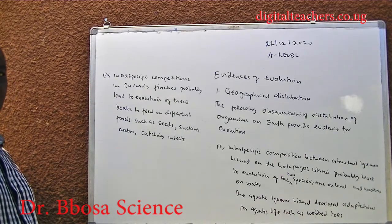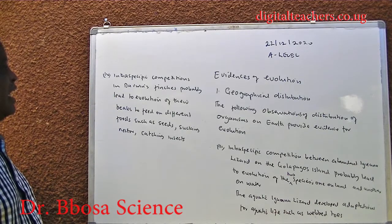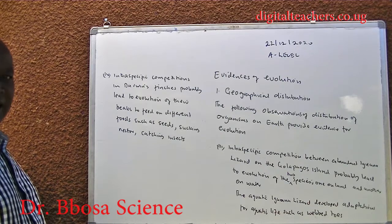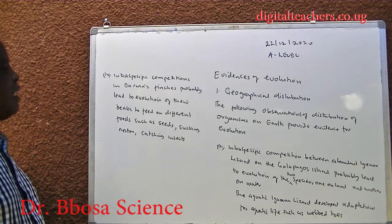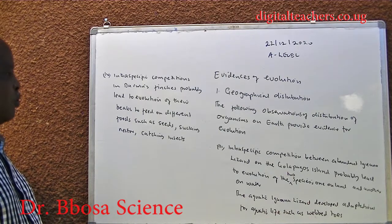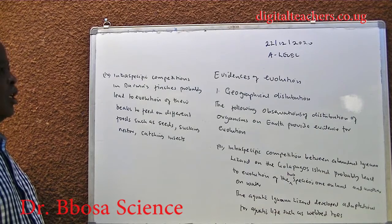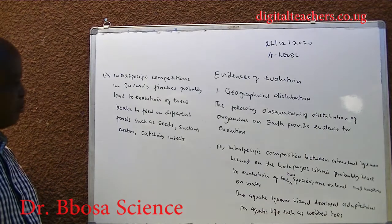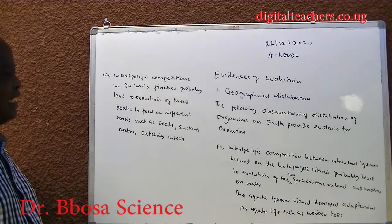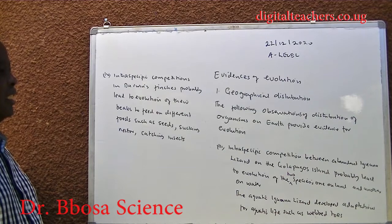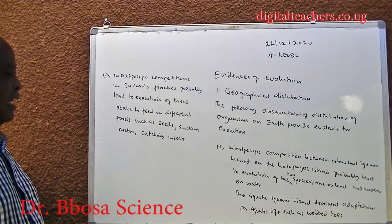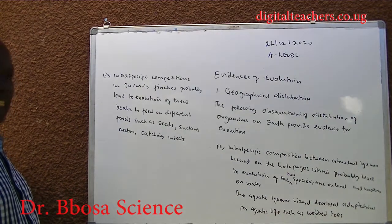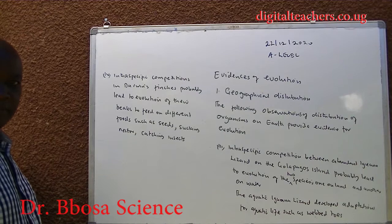Four: the intraspecific competition in Darwin's finches probably led to evolution of their beaks to feed on different foods such as seeds, sucking nectar, and catching insects.